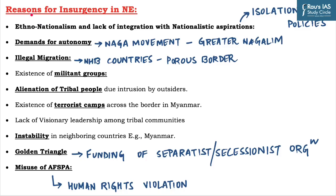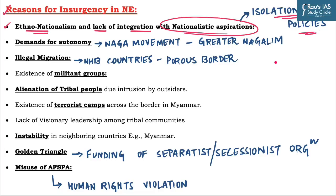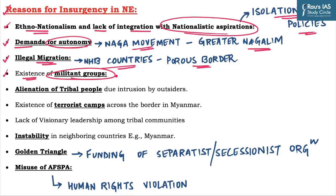The first reason for insurgency in North East is ethno-nationalism and lack of integration with nationalistic aspirations, rooted in the isolationist policies of the British, which primarily focused on isolating North East states from the mainstream national movement. The second reason is the demand for autonomy — various tribal groups are demanding larger control over the political landscape, for example, the Naga movement demanding greater Nagalim. The third reason is illegal migration due to demographic change caused by immigration from Bangladesh and Myanmar through porous borders. There is also the existence of militant groups such as ULFA and NSCN, the National Socialist Council of Nagaland.